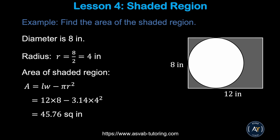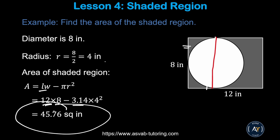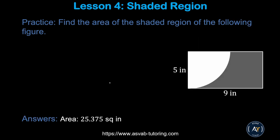Next, we'll learn how to find the shaded area. You find the area of the rectangle and subtract the area of the circle inside it. The width of the rectangle equals the diameter of the circle, which is 8, so the radius is 4. The shaded area equals length times width minus pi times r squared: 12 times 8 minus 3.14 times 4 squared, giving approximately 40.76 square inches.